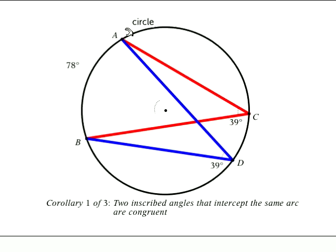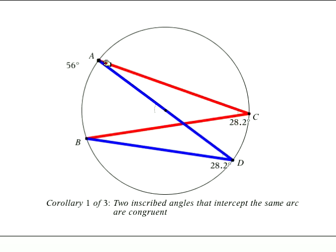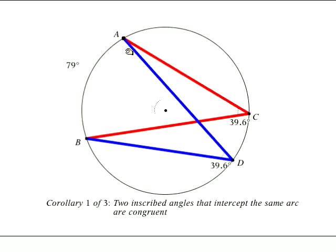Now they're both at 39. Let's see what happens when we move and change the intercepted arc. They are both identical at all times.